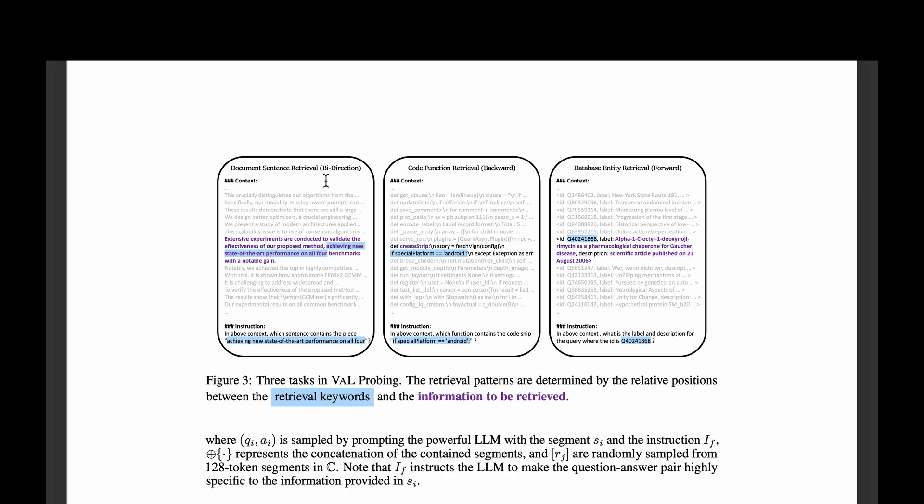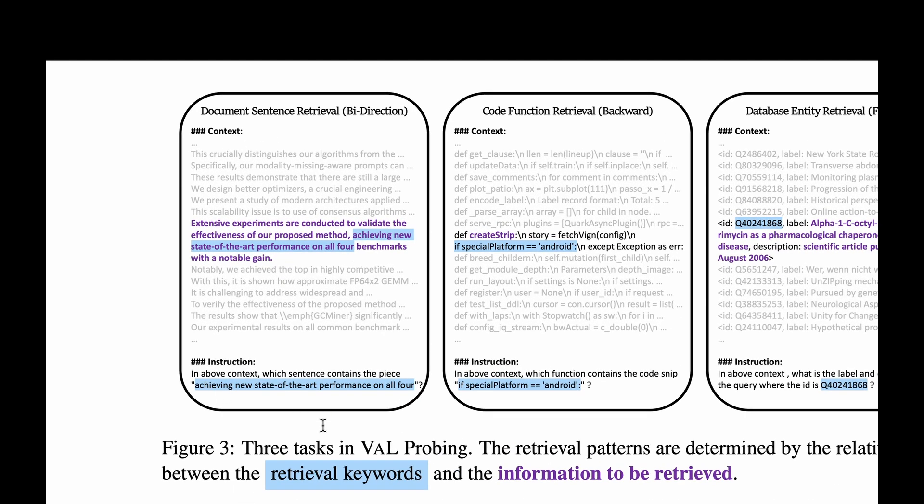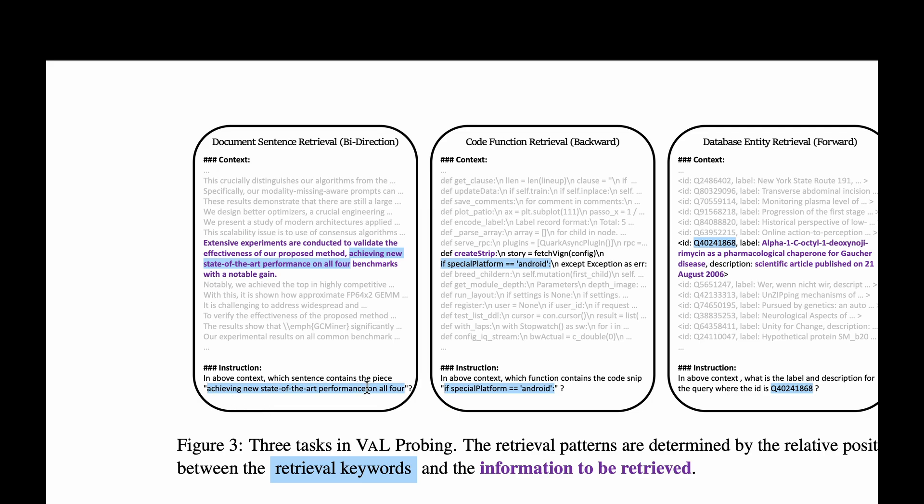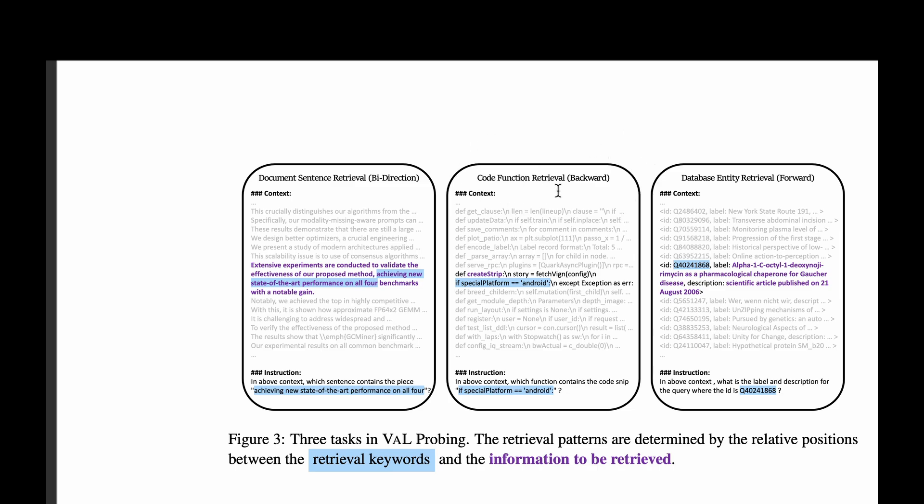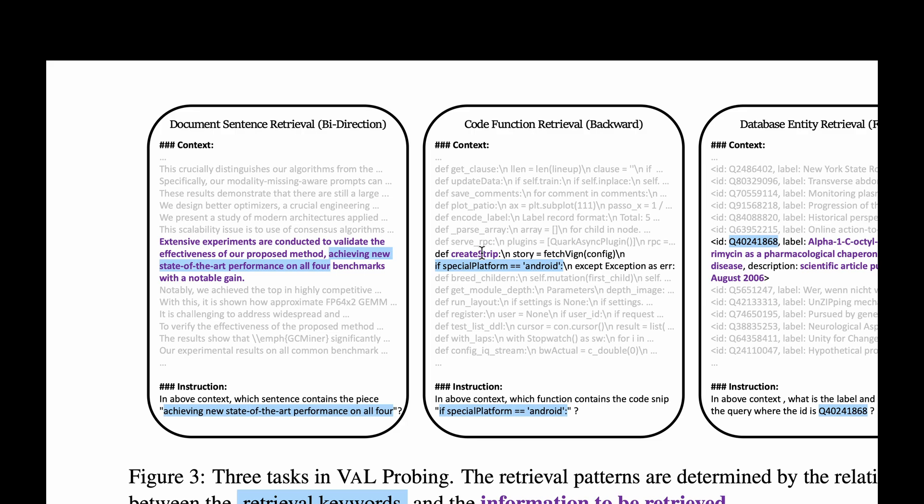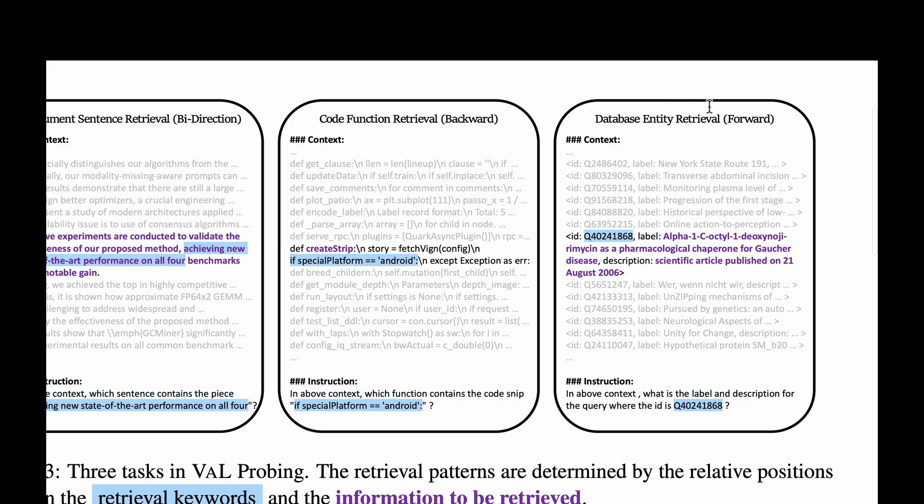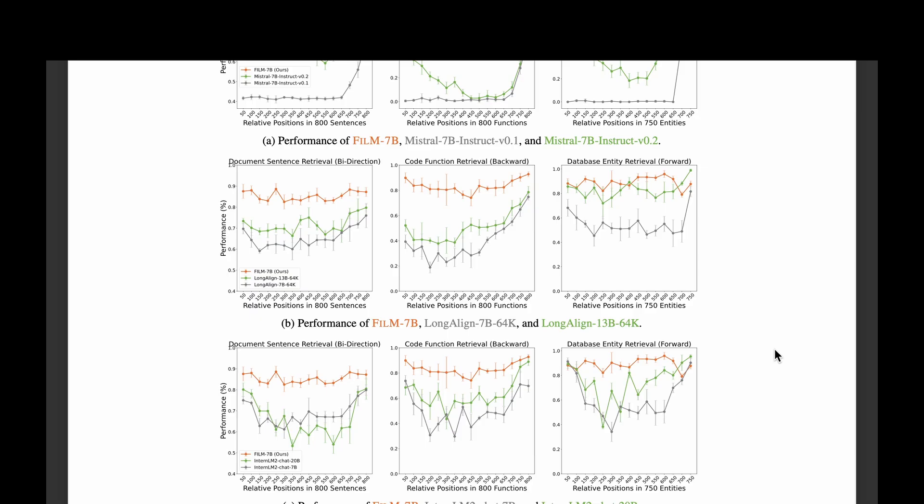For example, in case of document sentence retrieval, we have an example of the retrieval keywords, which are achieving new state-of-the-art performance on all four. And where does it occur? It occurs in the middle of a sentence, and so this becomes a bidirectional case. And there's also the other type of data, which they have considered as code. And in this case, they're given an example of backward retrieval case, where the retrieval keyword happens to have a context that's before or backward to that of the retrieval keyword. And the third type is the structured data, which is a SQL query table. And they've given an example of a forward retrieval. For example, this code, it occurs here, but then the entire context occurs after that has occurred.